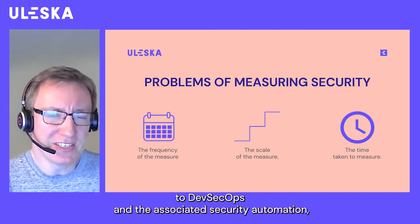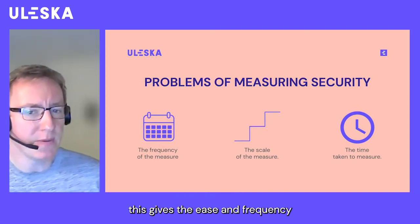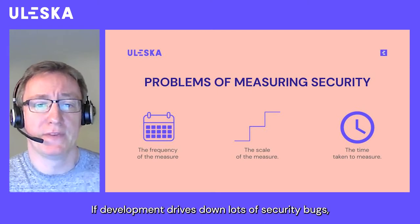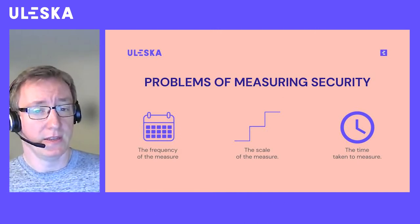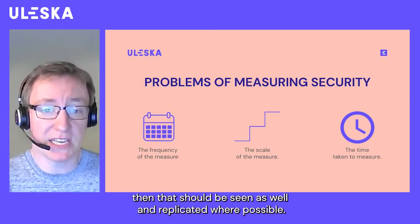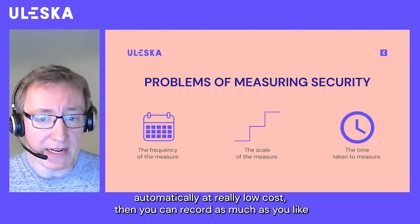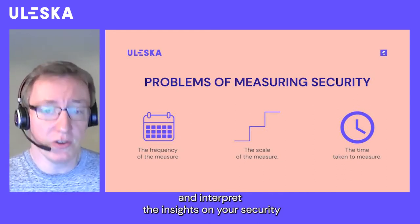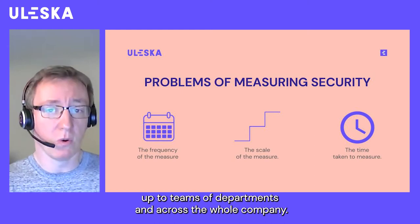For companies that turn to DevSecOps and the associated security automation, this gives the ease and frequency of measurements that are needed, and then you can work with much more data. If development drives down lots of security bugs, you want that to be recognized and rewarded. And if security teams add automation that either highlights or drives down the risk, then that should be seen and replicated where possible. When metrics are recorded automatically at really no cost, you can record as much as you like and interpret insights on your security that work across individual projects, up to teams and departments, and across the whole company.